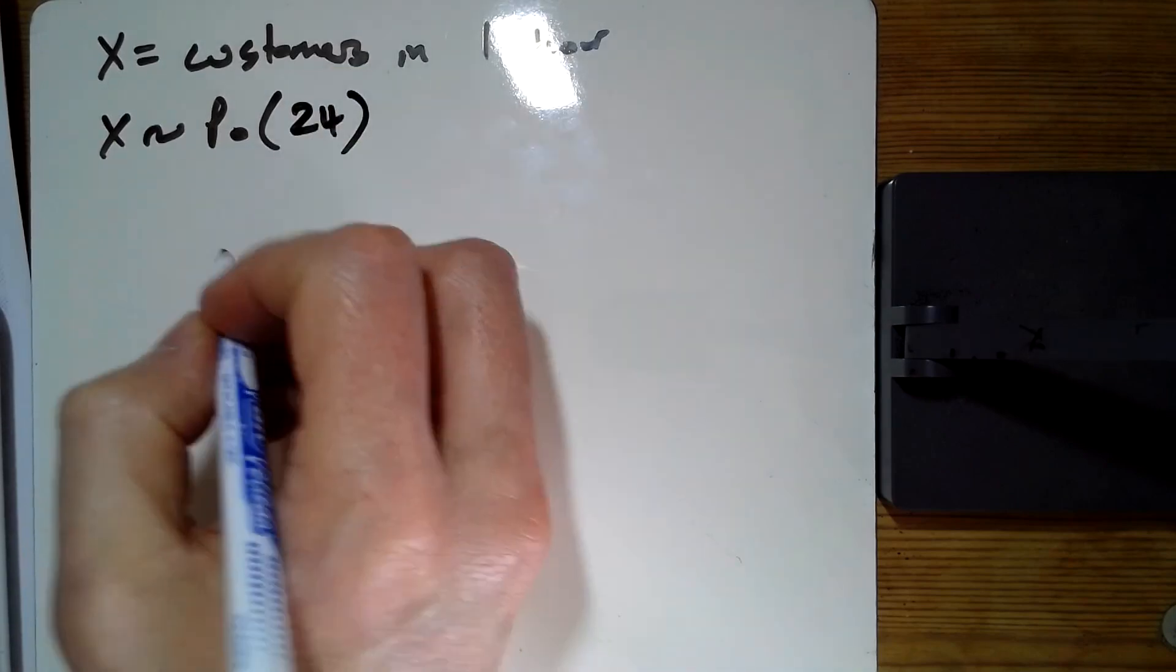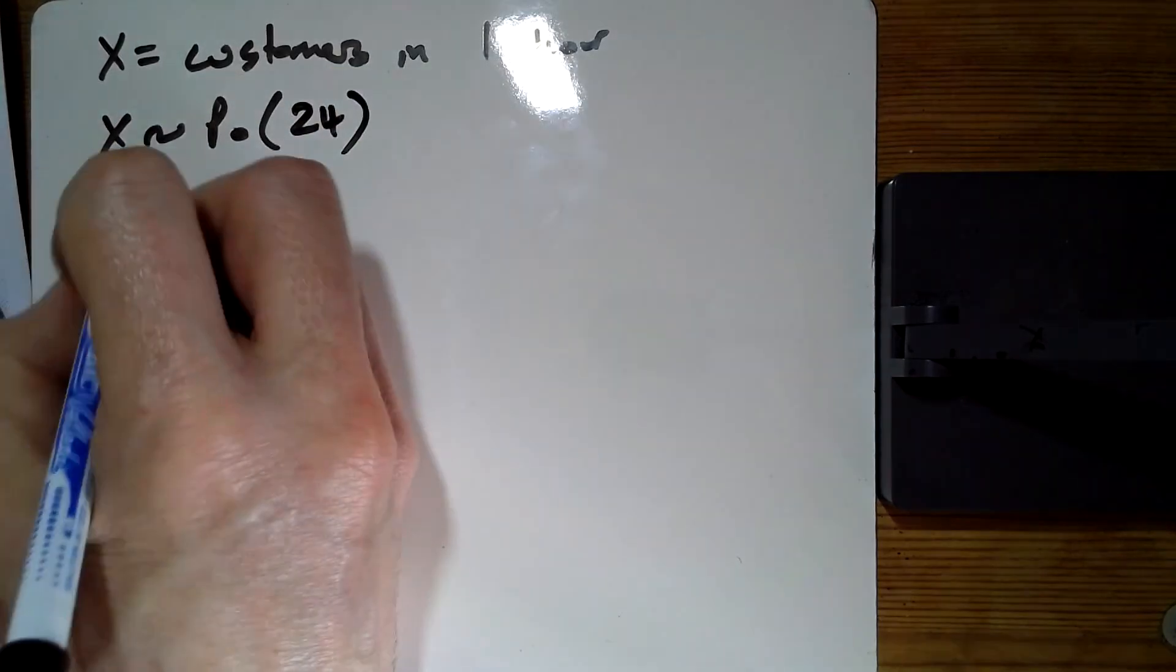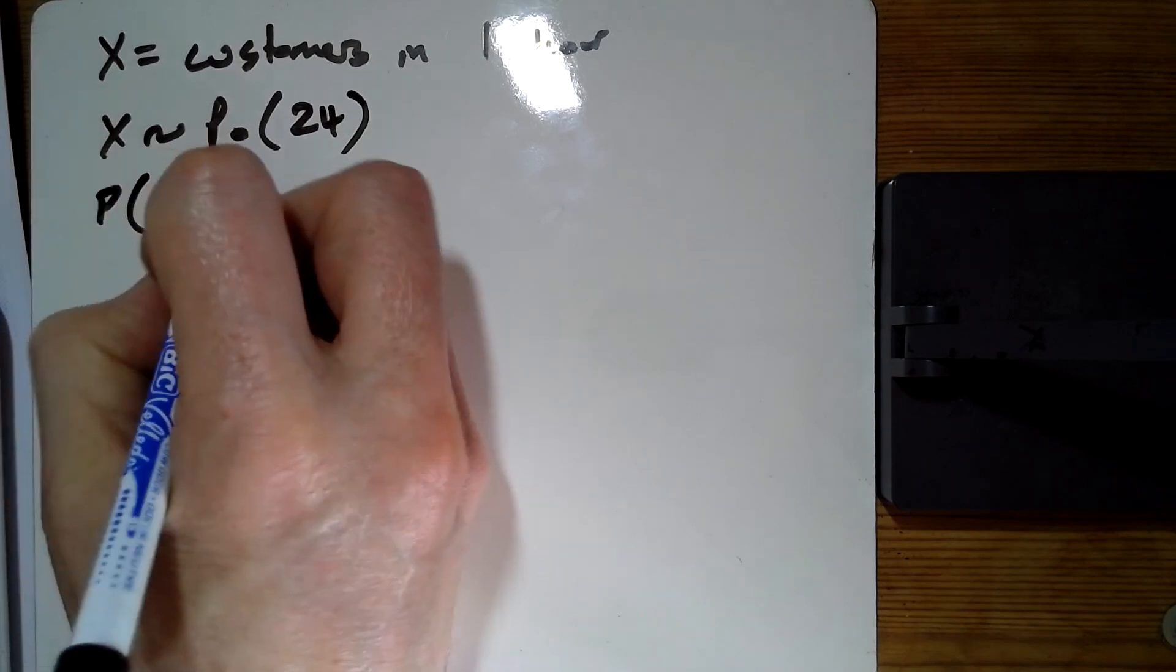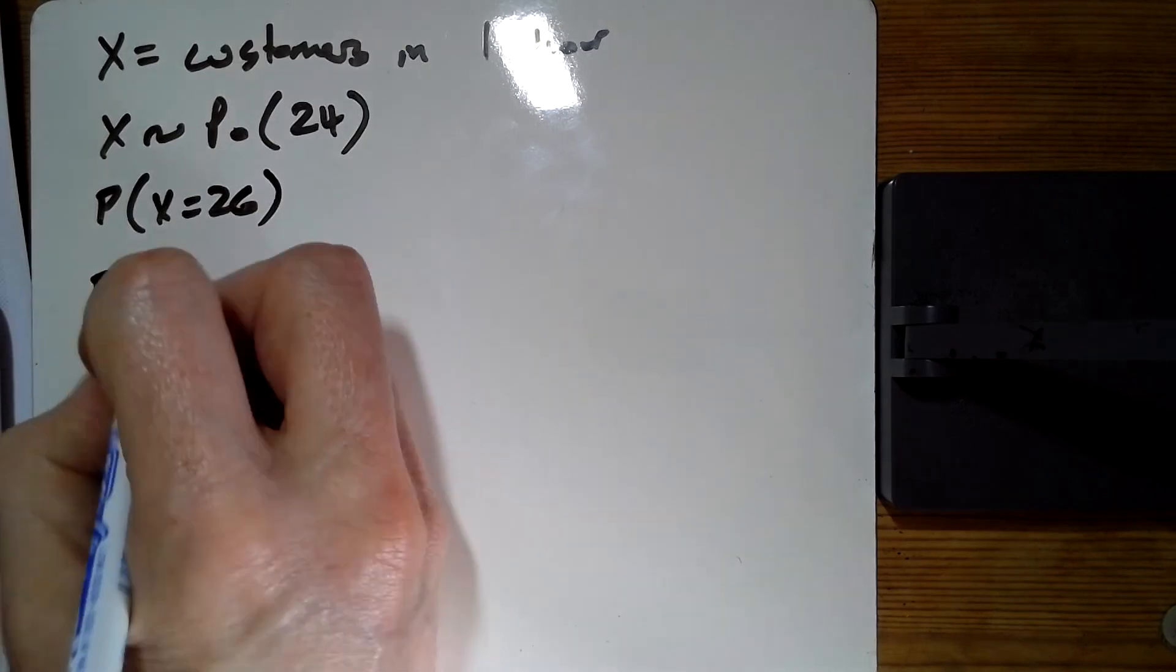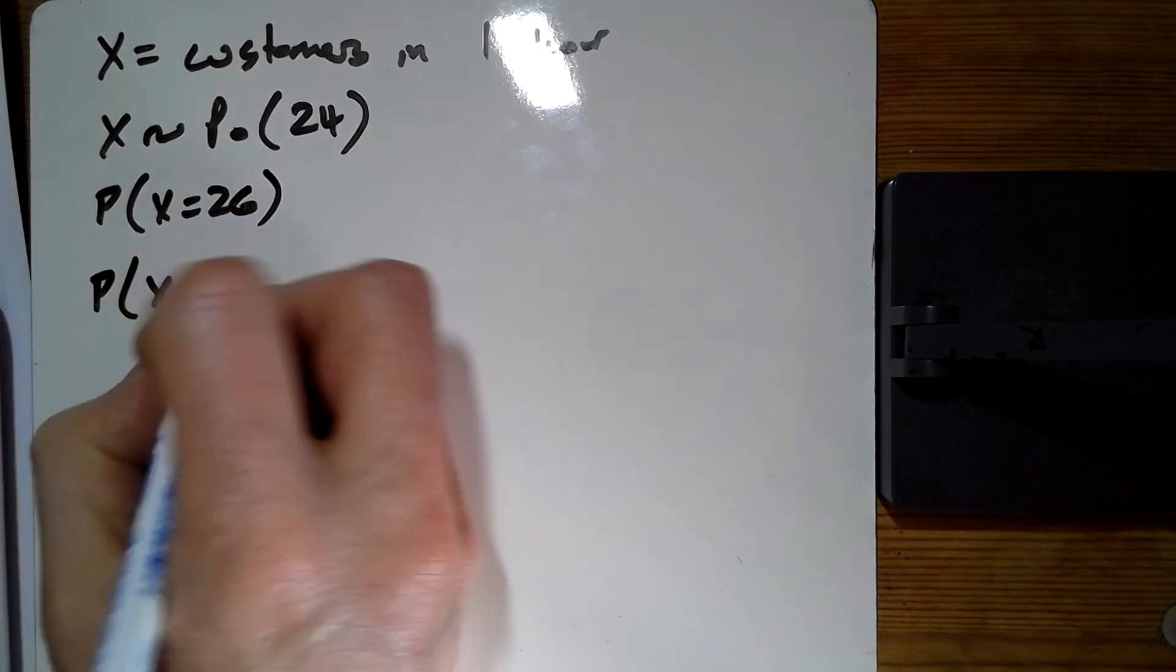The first part asks to find the probability of exactly 26 customers, and the second bit asks for at least 21 customers. So we'll grab the calculator to do those.